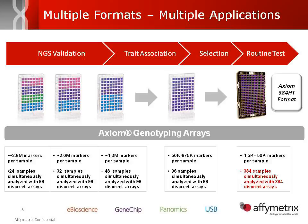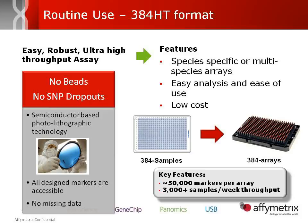The routine application uses the 384HD format. I have one right here. Each one of these 384 arrays has 50,000 markers, so you can imagine the data points when using it for a routine breeding application. It's extremely easy to use — when you're working with routine applications, you want results quickly and a low-cost solution. This plate allows you to go from samples in a 384 microtiter plate, take it all the way through the assay, and get 50,000 data points for each of the 384 samples. Analysis is very quick.